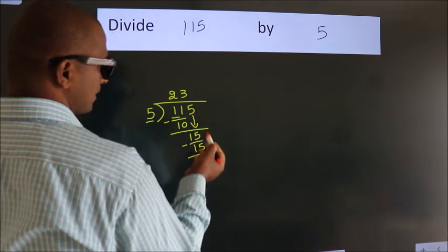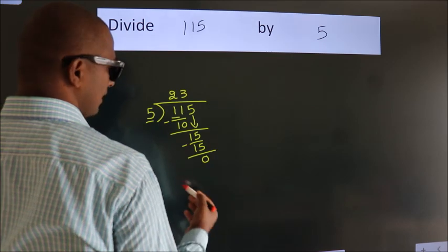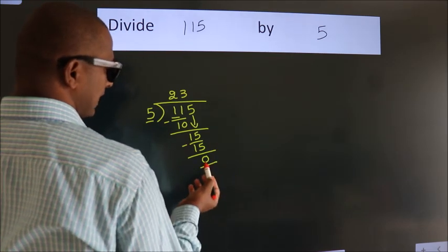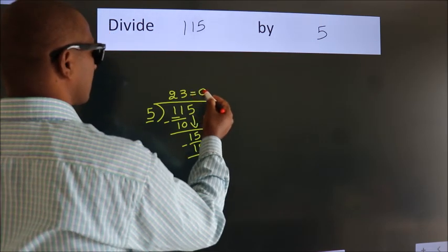After this, no more numbers to bring it down. And we got remainder 0. So this is our quotient.